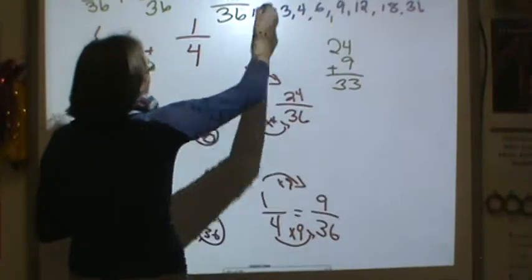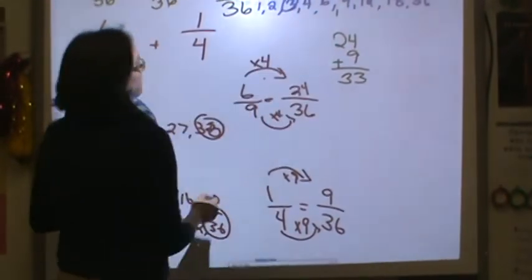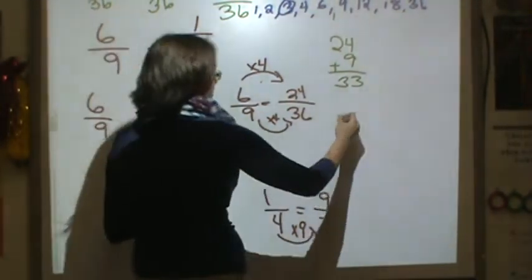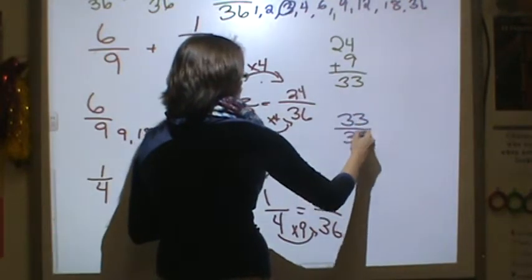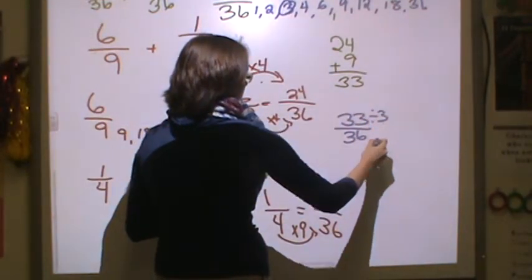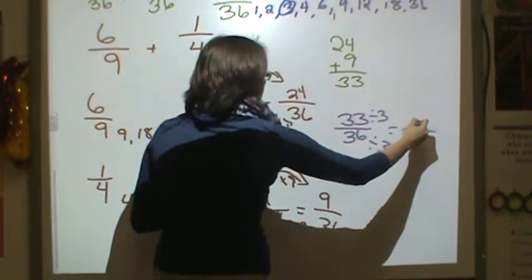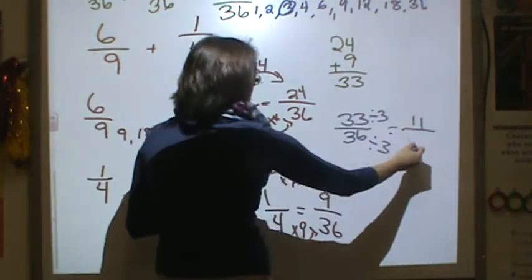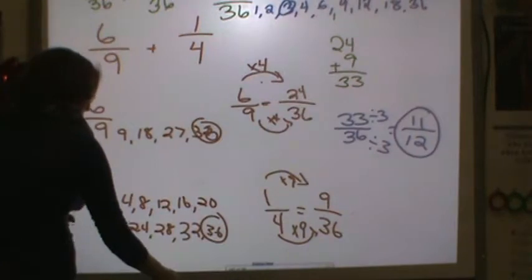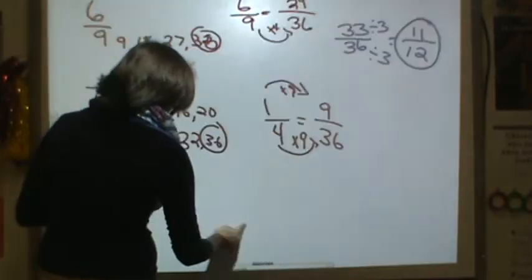The greatest common factor for them is three. So I'm going to divide top and bottom by three. So thirty-three thirty-sixths divided by three, both the top and bottom, is eleven, and thirty-six divided by three is twelve. So my final answer here is eleven twelfths.